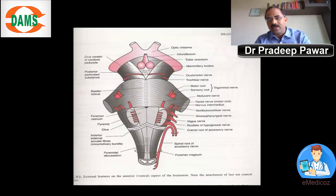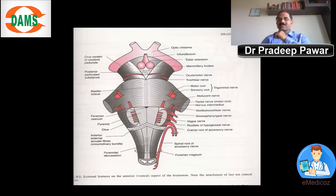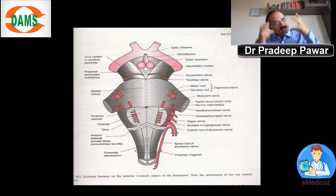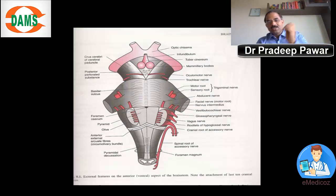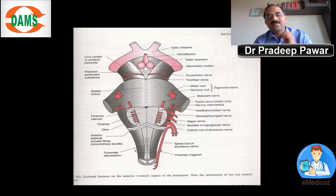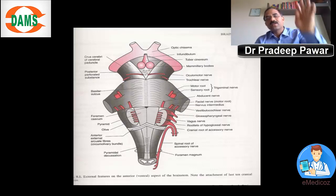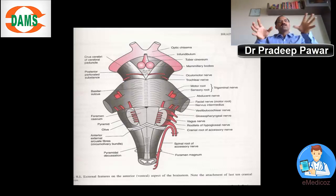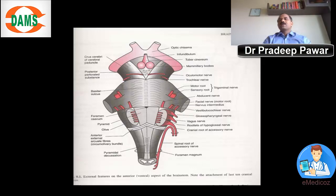We generally say the contents of the carotid sheath are the common carotid and internal carotid artery, the internal jugular vein, and the vagus nerve. But at the base of the skull, the carotid sheath contains the internal carotid artery, the internal jugular vein, and the last four cranial nerves — the 9th, 10th, 11th, and 12th. Remember that all these cranial nerves are within the carotid sheath at the base of the skull.